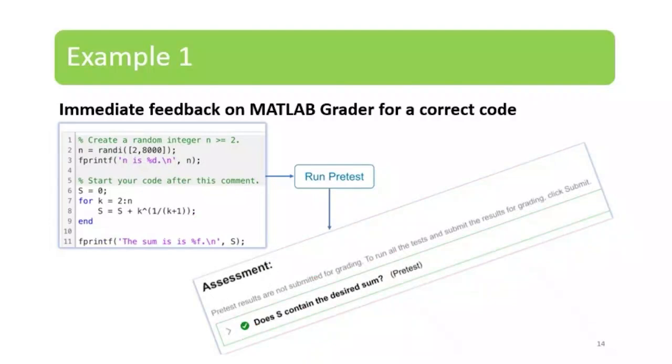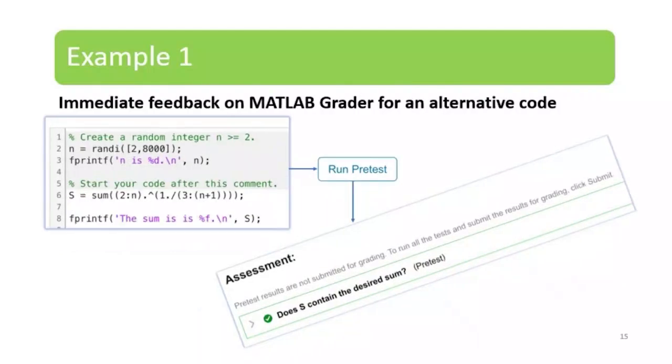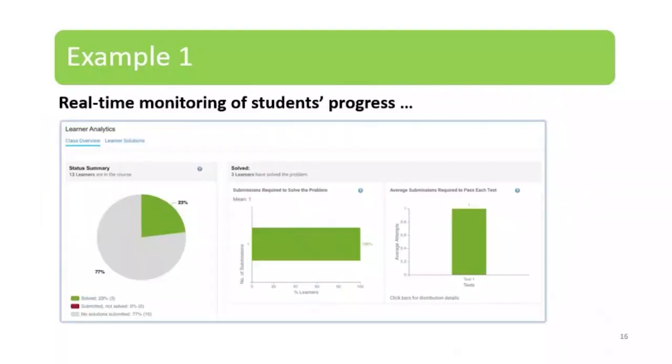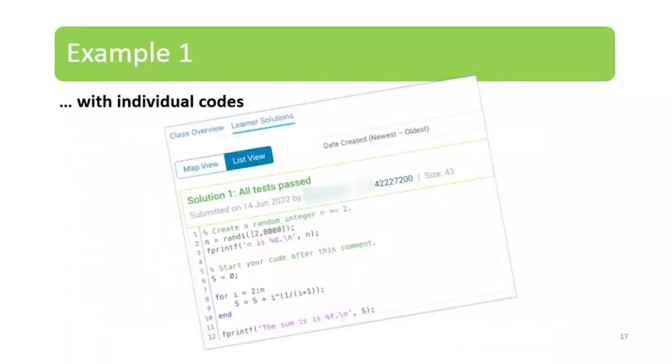They could get immediate feedback. If that code is correct, they would get that is correct. If they change the solution a bit, even if they are putting another solution, MATLAB Grader will still mark them as correct. From the perspective of the instructor as well, we do not have to worry about students having many different solutions. We do not have to worry about that. We just let the system do it, so that saves time. We also have real-time monitoring of student progress. Once the student tracks the problems, we could actually look at that progress right away, for the overall and for individual code as well.